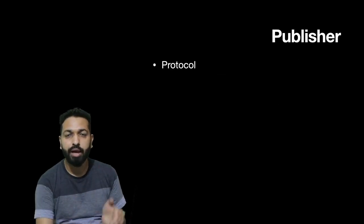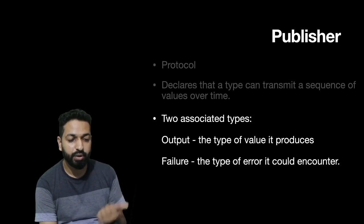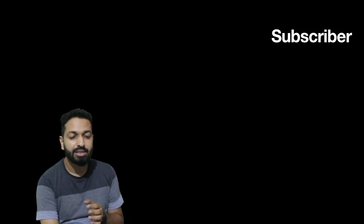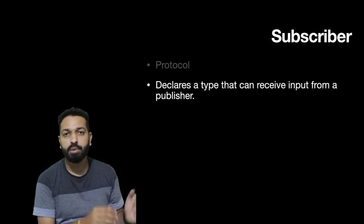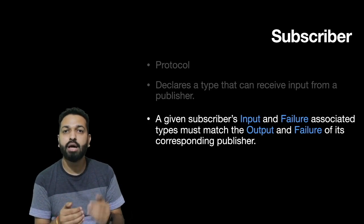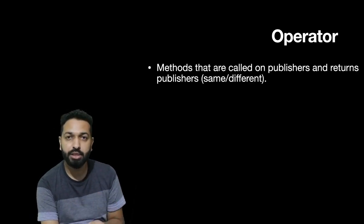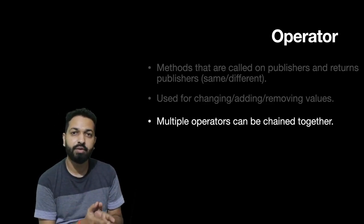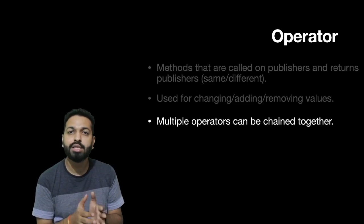In terms of code, Publisher is a protocol — any entity that conforms to it can transmit a sequence of values over time. This protocol has two associated types: one for output (the type of value it can produce) and one for failure (the type of error that can be encountered). Similarly, Subscriber is a protocol — any entity conforming to it can receive input from a publisher. To make publisher and subscriber work in sync, the input type and failure type of a subscriber must match the output type and failure type of its corresponding publisher. Operators are methods called on publishers that return publishers, used for manipulating values — they can be chained together.